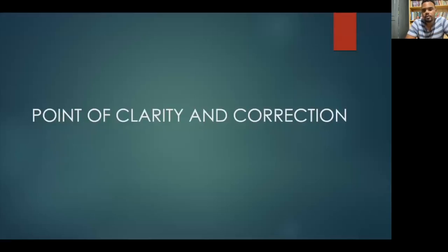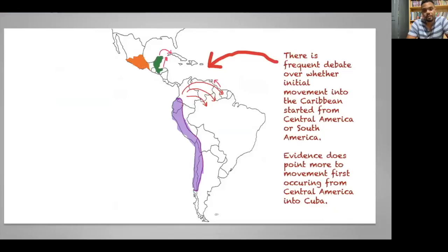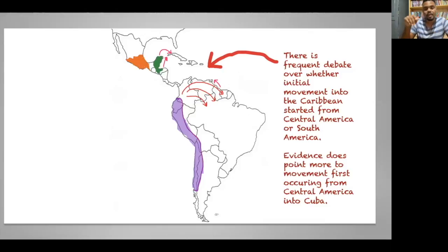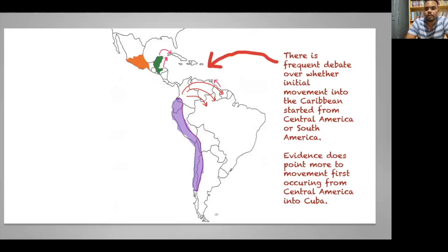First, we want to go through some points of clarity and correction from episode one. There is frequent debate over whether initial movement into the Caribbean actually started from Central America or from South America. However, the evidence does point more to movement first occurring from Central America into Cuba. It's very important to note that movement from Mesoamerica into Cuba, as well as movement from South America into Trinidad and then to the rest of the islands, were the initial migratory movements into the Caribbean region.